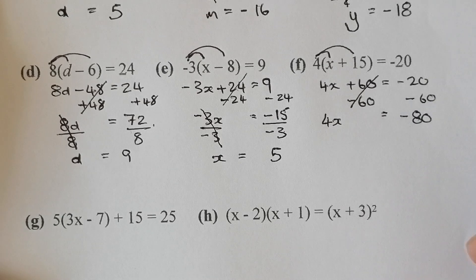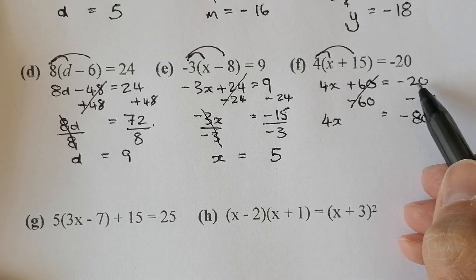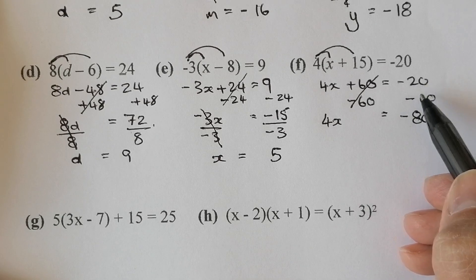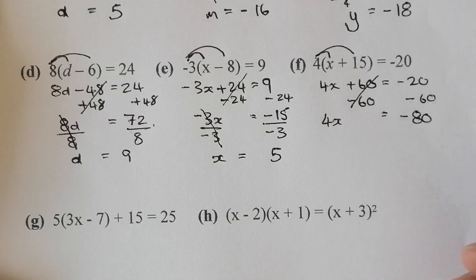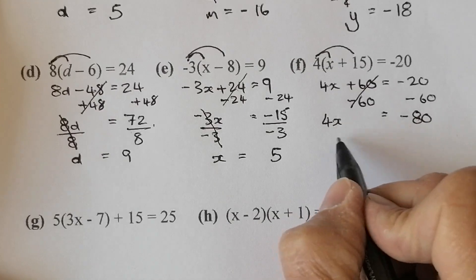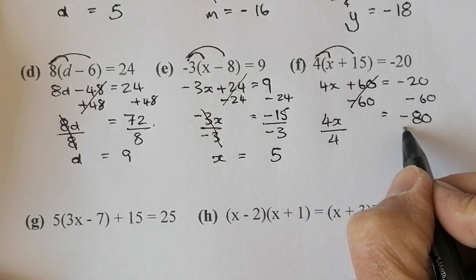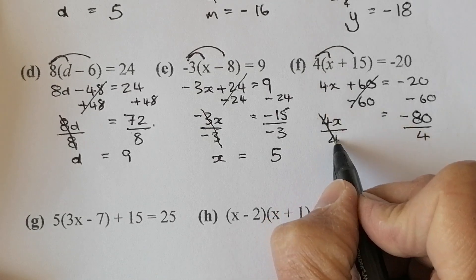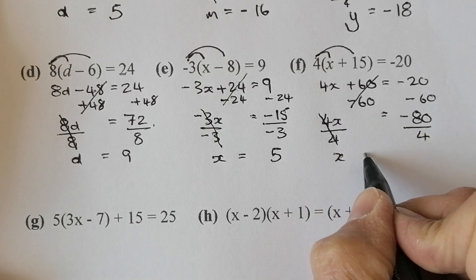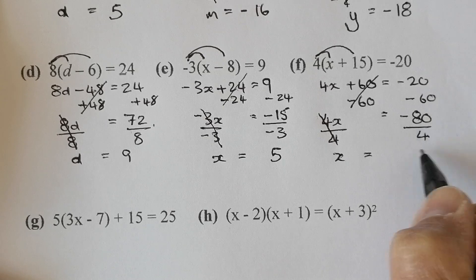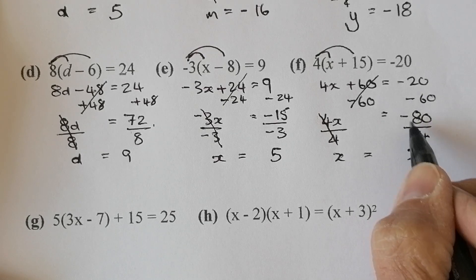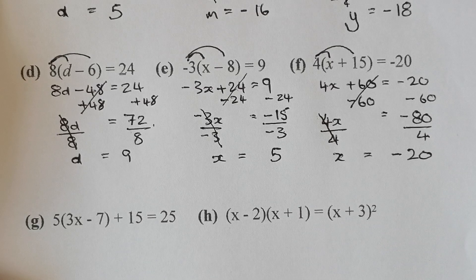Don't get confused with two minuses making a positive — we're starting at minus 20 and going down by another 60, so that takes us to minus 80. I'm going to divide each side by 4 to get rid of the 4 that's there. That cancels out, leaving me with 1x equal to — 4 into 80 equals 20. I've got one negative sign in the calculation, so it must be a negative answer. So x equals minus 20.